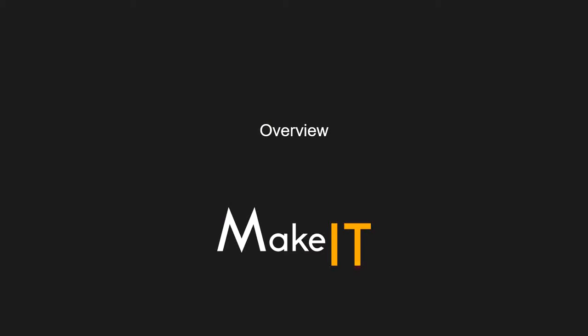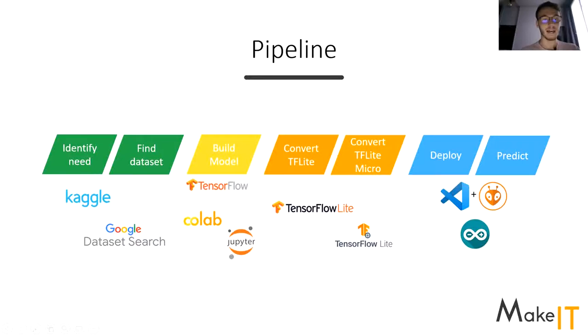Hello everybody and welcome. Happy to see you again for this second tutorial. Today we are going to make a step further into the tiny machine learning world. We are going to deploy a model that tries to predict weather on this tiny board, the Arduino Nano 33 BLE Sense. As last time, we'll use three of the onboard sensors and we'll try to forecast the weather.